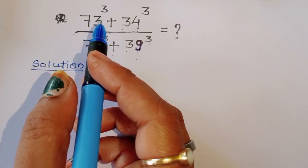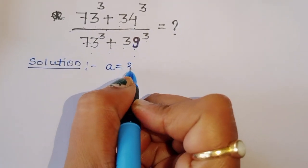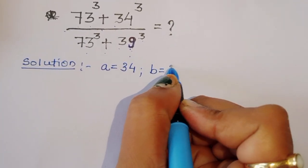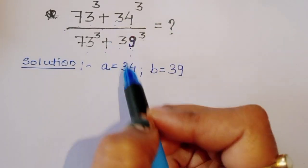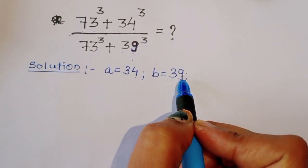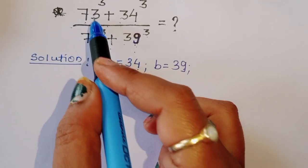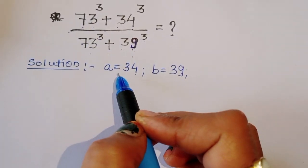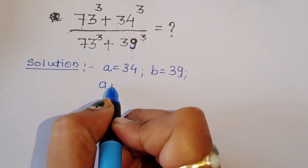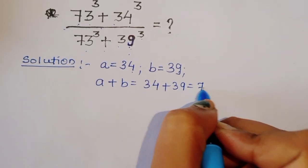If you notice here, we can consider the second term as 34, so let A equal to 34 and B equal to 39. Now, when we add A plus B, that is 34 plus 39, we get 73. So A plus B equals 73, which is exactly the first term in our expression.